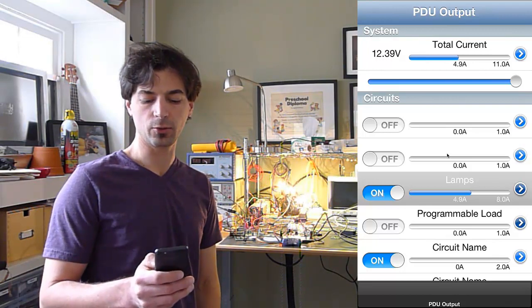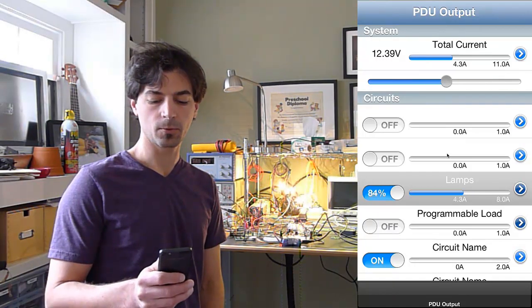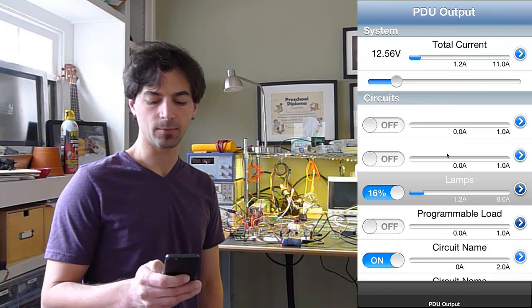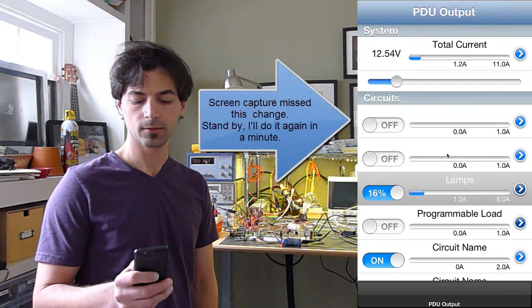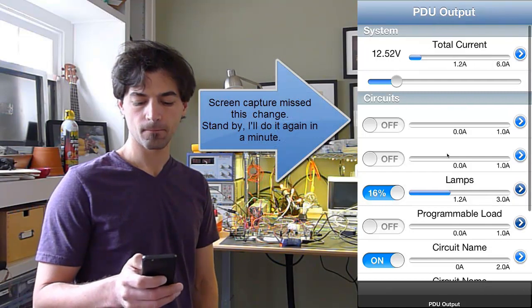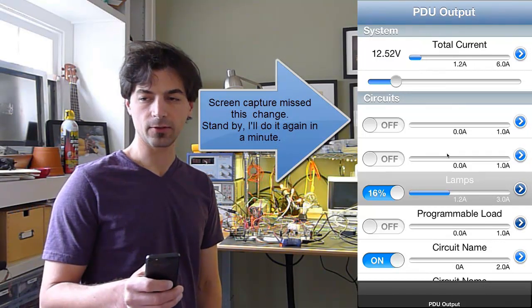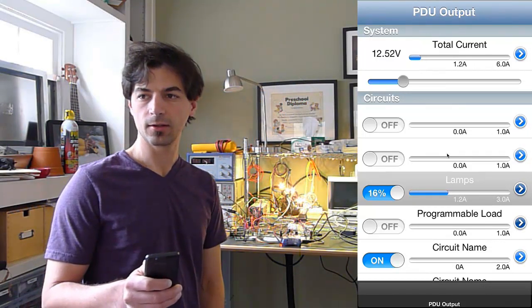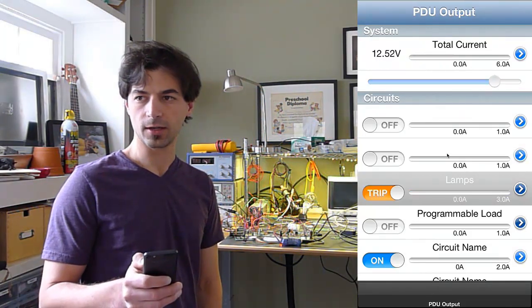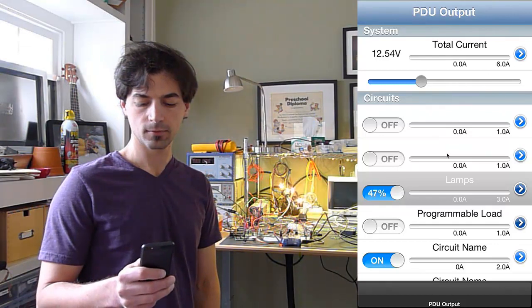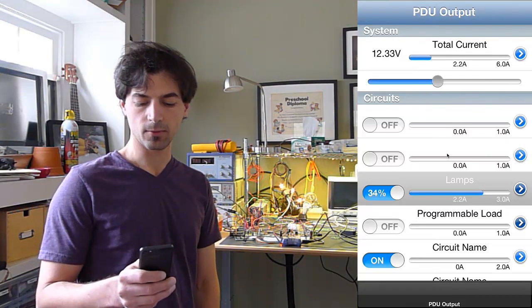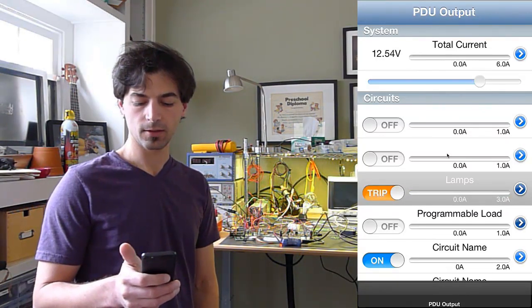And the circuit is set to fuse at eight amps, but we're going to change that right now. We're going to change that to three. And now we'll select that circuit and adjust the duty cycle until it trips. We'll turn it up again. There it goes.